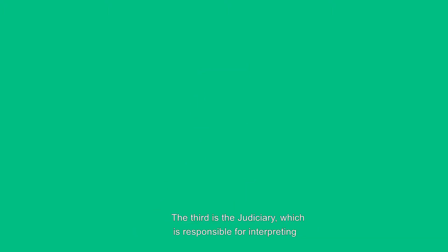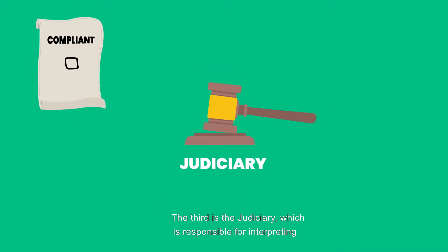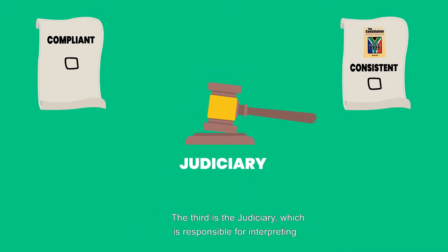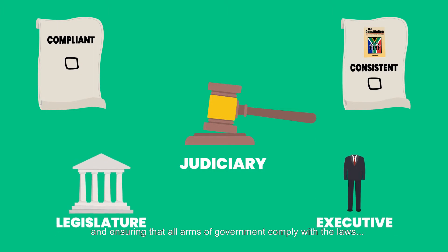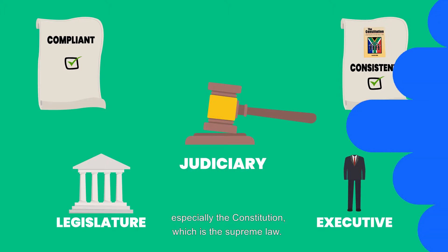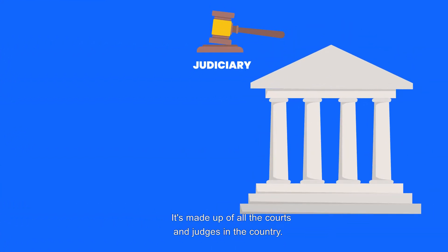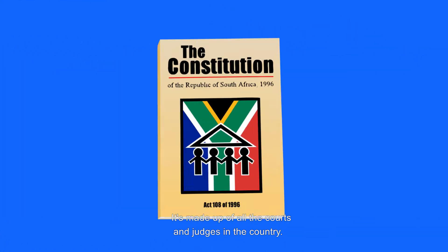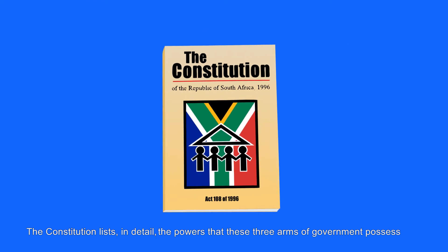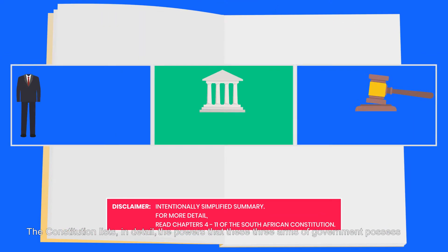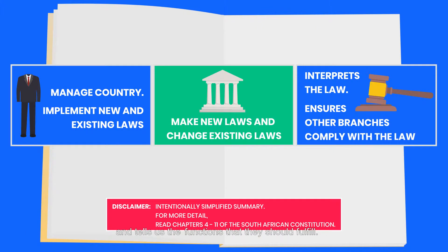The third is the judiciary, which is responsible for interpreting and ensuring that all arms of government comply with the laws, especially the constitution, which is the supreme law. It's made up of all the courts and judges in the country.